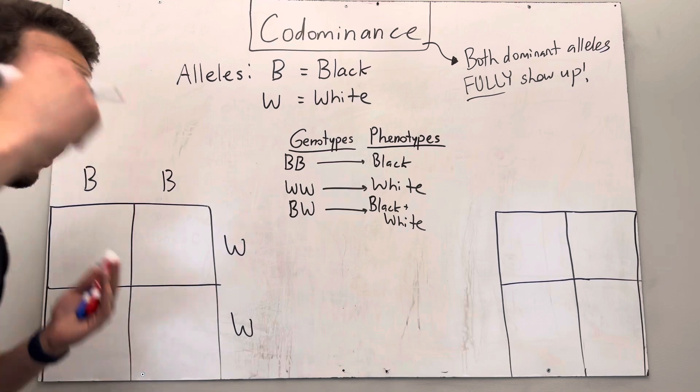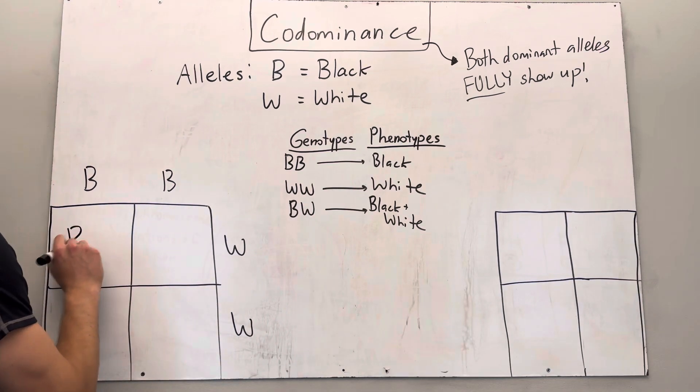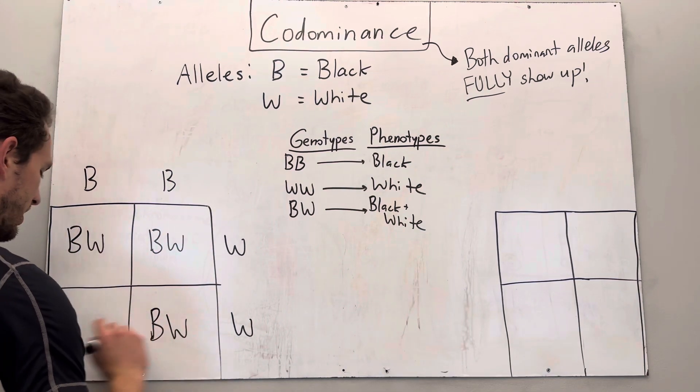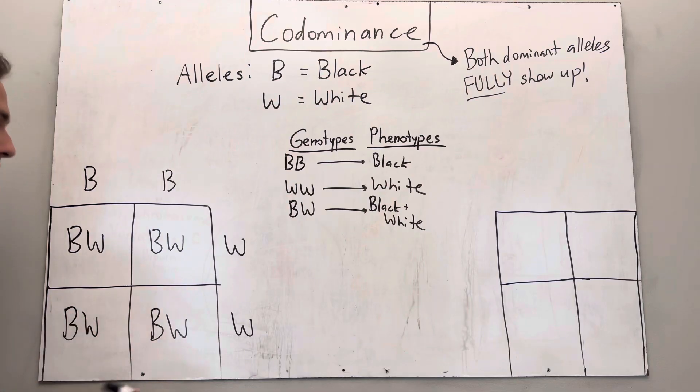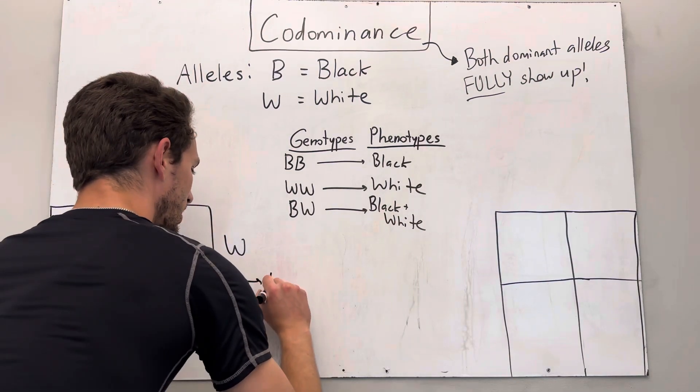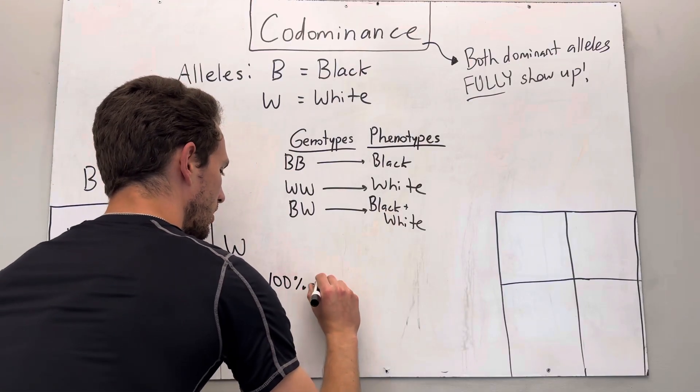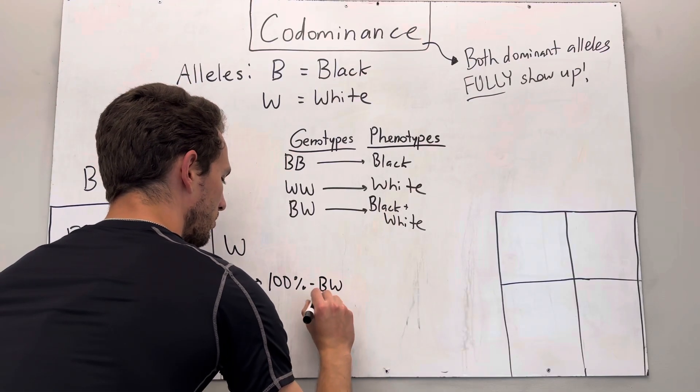Well, 100% of their offspring, if I do this cross, will have the heterozygous genotype, which means all of their offspring, 100%, would be black and white. So 100% would be BW, and they would be black and white.